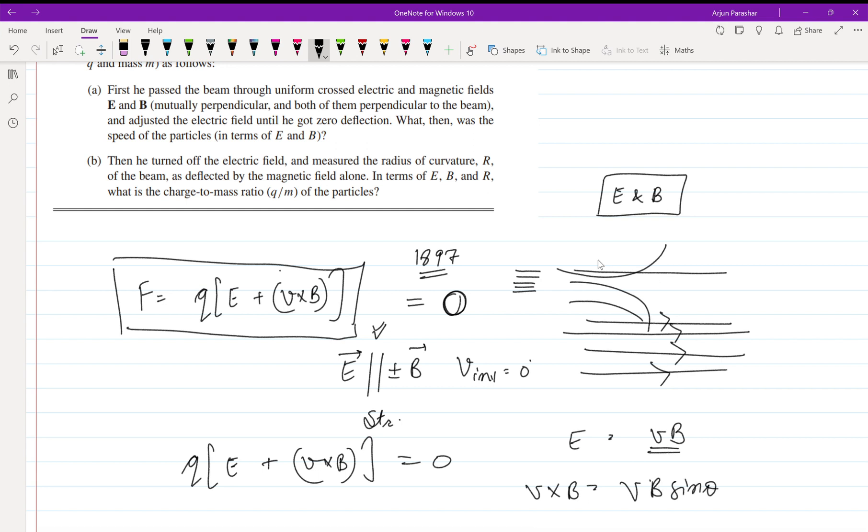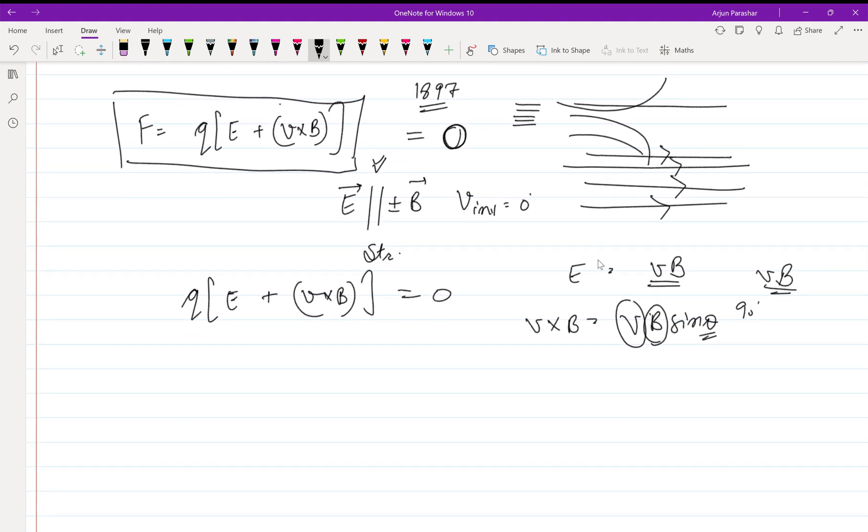As you know, v cross B equals vB sin θ. The angle between them—it is already given that they are both perpendicular to each other and perpendicular to the beam also. That is why the angle is 90 degrees and v cross B becomes v into B. So putting the values, E = -vB, so velocity comes out to be E upon B.